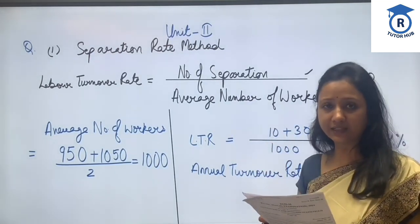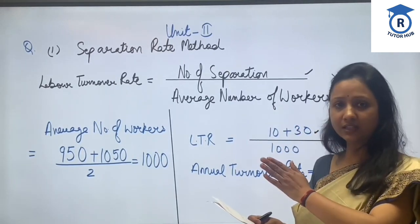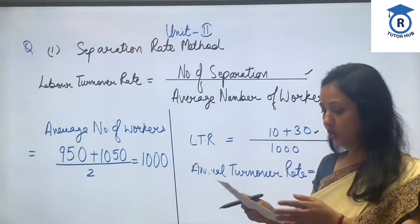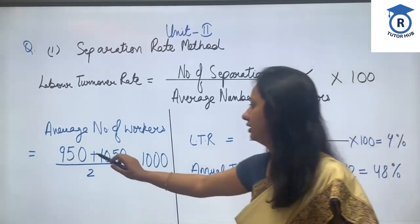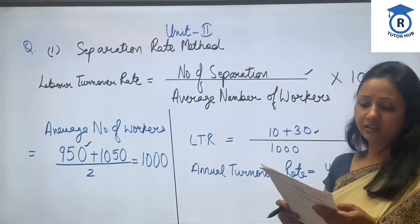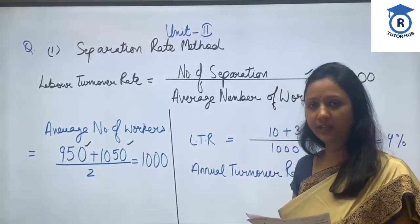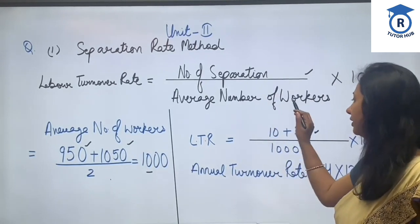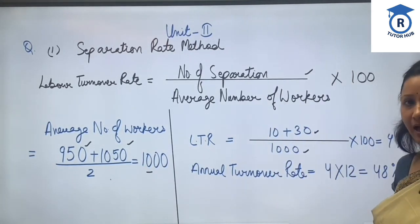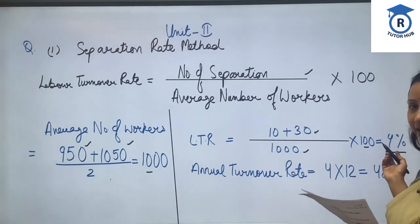So number of separations is 40, divided by average number of workers. Average number of workers is calculated as: opening number of workers plus closing number of workers divided by 2 — that is 950 plus 1050 divided by 2, which equals 1000. This is our average number of workers. Multiplied by 100, this gives us 4% as our monthly rate.